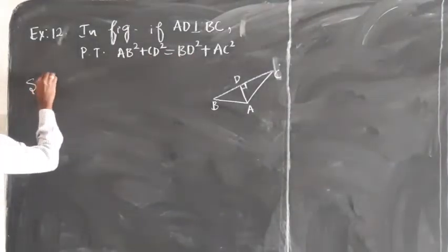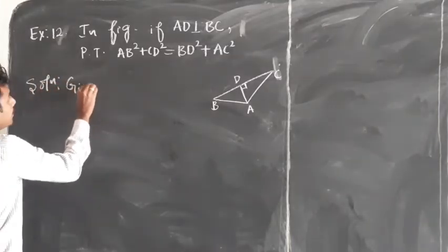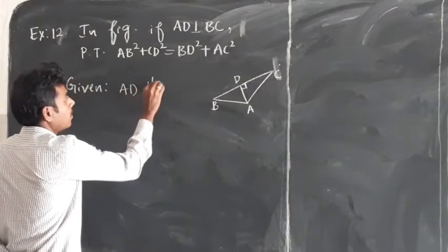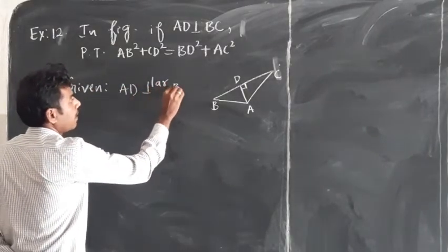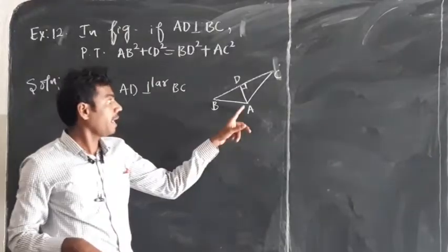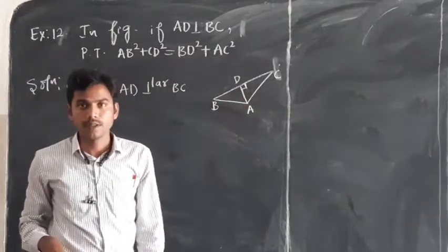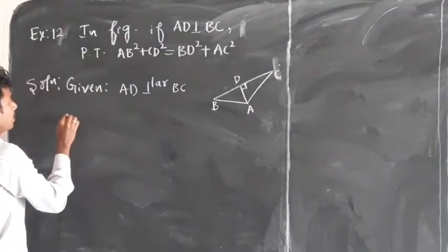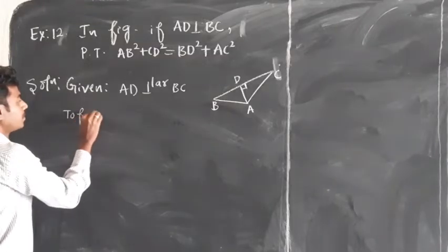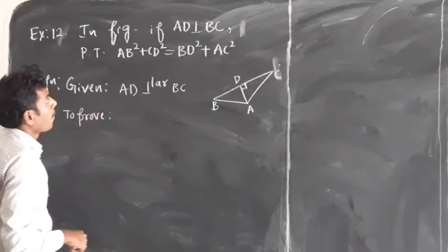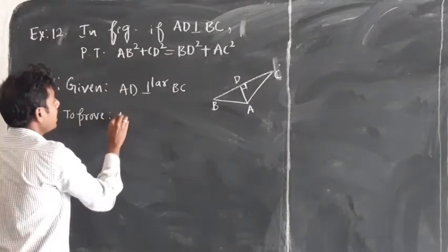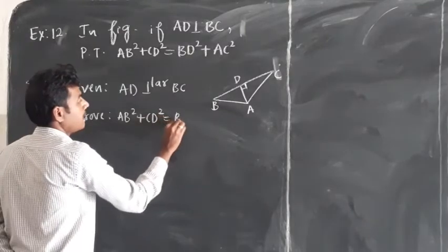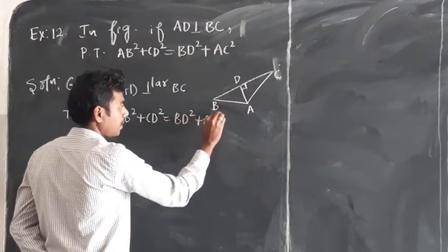What is given to us? AD is perpendicular to BC, and from this we can say triangles ADB and ADC are right angle triangles. What is required for us to prove? AB square plus CD square is equal to BD square plus AC square. This we need to prove.